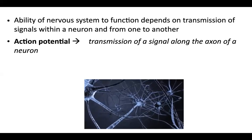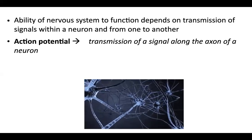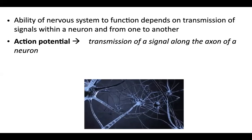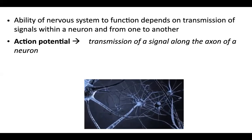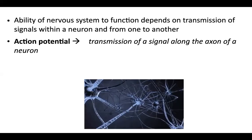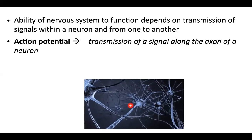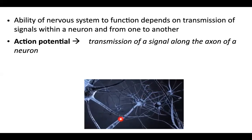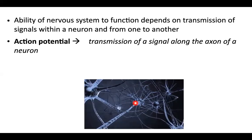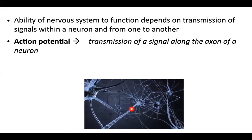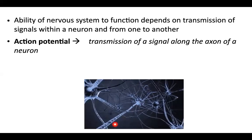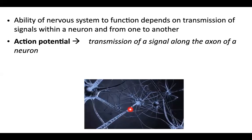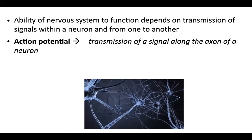The impulses are called action potentials. This is the transmission of a signal along the axon of a neuron. Overall, we talk about an impulse going from one neuron to another, but when talking about how it travels through the axon — this thick stalk-like part — that's the action potential.